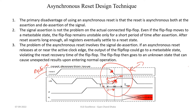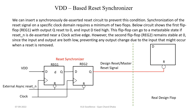In order to implement this design, we have to introduce some circuit which will remove the problem of meta-stability during asynchronous reset deassertion. Here comes the solution, and the solution is a VDD-based reset synchronizer. We are going to see how this circuit can avoid the asynchronous reset deassertion meta-stability problem.